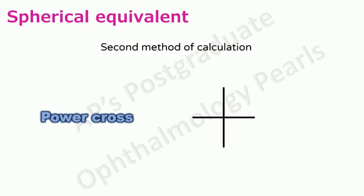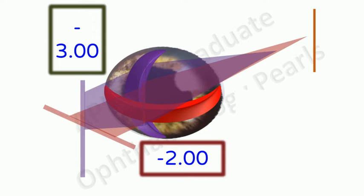We can also determine the spherical equivalent from the power cross. What is a power cross? You know that in regular astigmatism the principal meridians represent the meridians of maximum and minimum power of a toric surface. The power cross represents the power of the eye in the form of a cross and shows the refractive power of the eye in the two principal meridians.